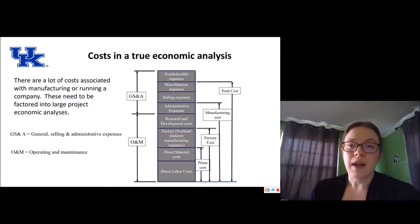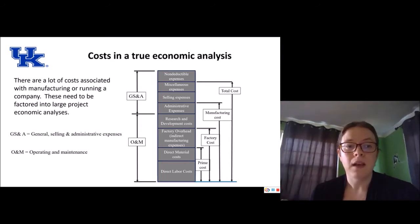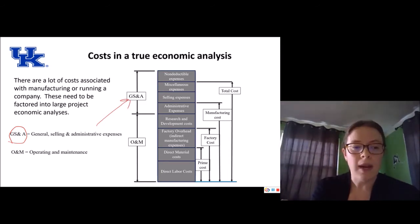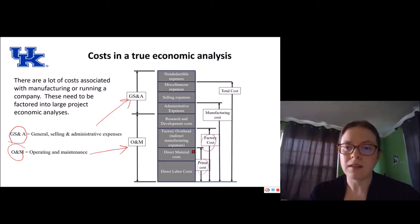In a true economic analysis, we're going to be looking at way more than just the bill of materials and non-recurring costs like engineering time. There are lots of costs associated with manufacturing or running a company, and those need to be factored into large project economic analyses. We can look at GS&A — General Selling and Administrative Expenses — and O&M, which is operating and maintenance. We also have non-deductible expenses and miscellaneous costs. You can read down the list to see which ones are considered prime costs, factory costs, manufacturing costs, and of course the total cost. There's a lot that goes into performing a true economic analysis.